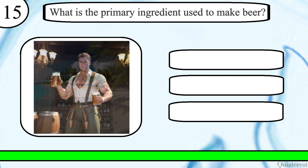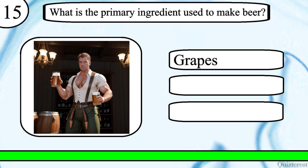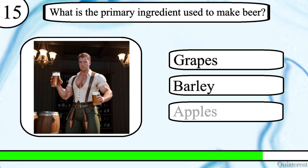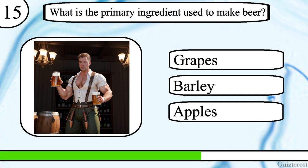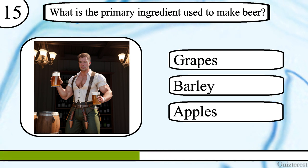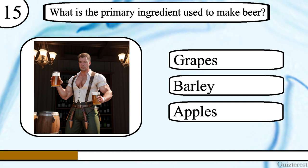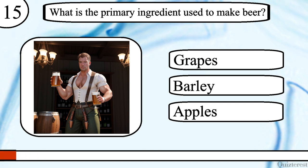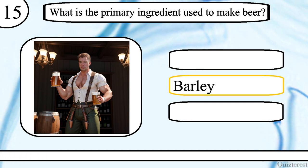Question 15. What is the primary ingredient used to make beer? Grapes, barley or apples? The correct answer is barley.